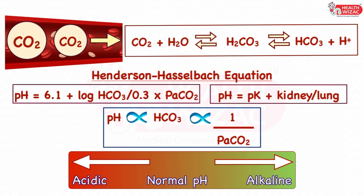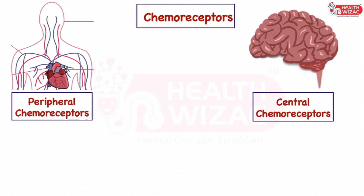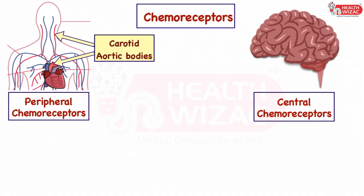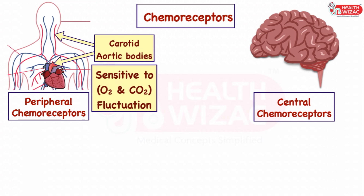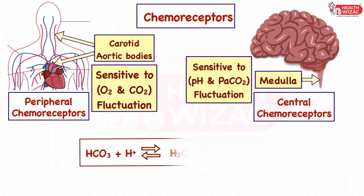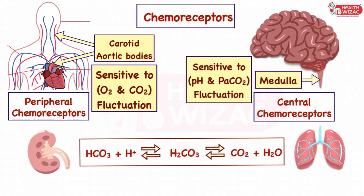This change triggers chemoreceptors which help in normalizing the pH. Chemoreceptors are either peripheral or central. Peripheral chemoreceptors are present in carotid and aortic bodies, sensitive to oxygen and carbon dioxide fluctuations, whereas central chemoreceptors are present in the medulla and are sensitive to PaCO2 and pH. Normalization is achieved by the compensation mechanism supported by kidneys or lungs.